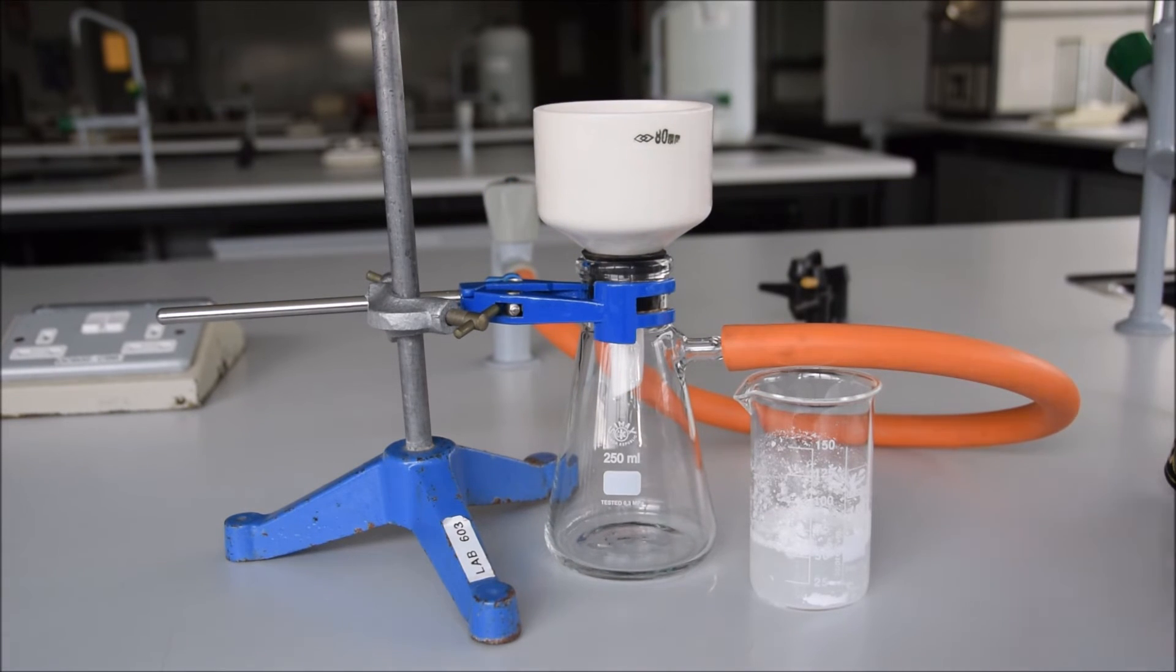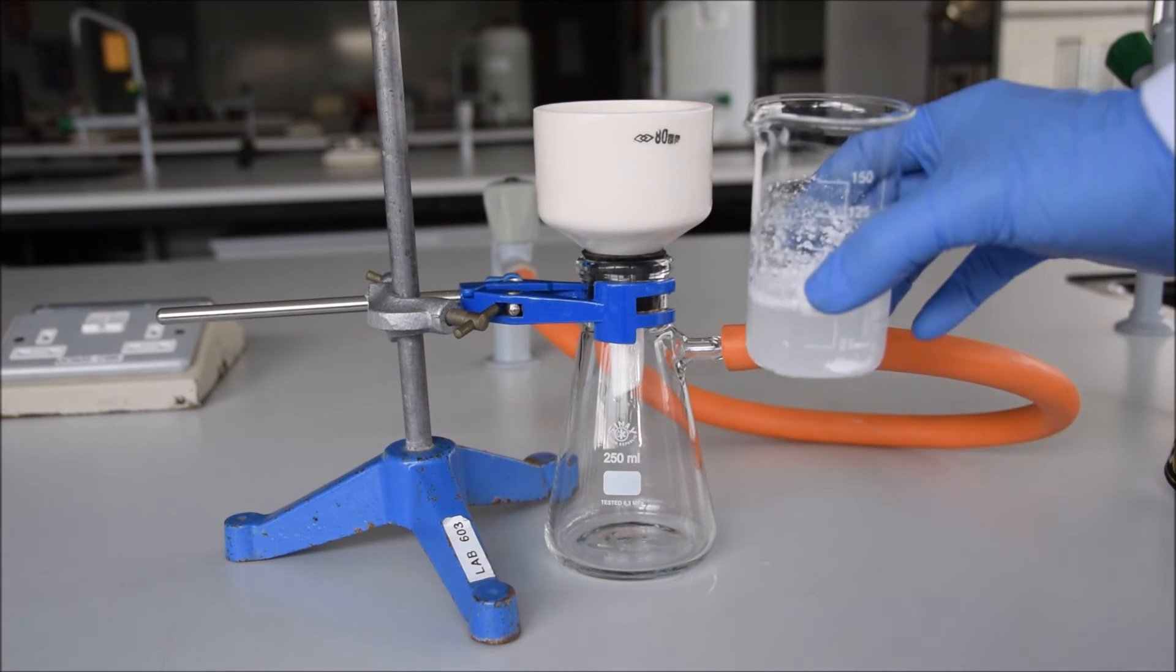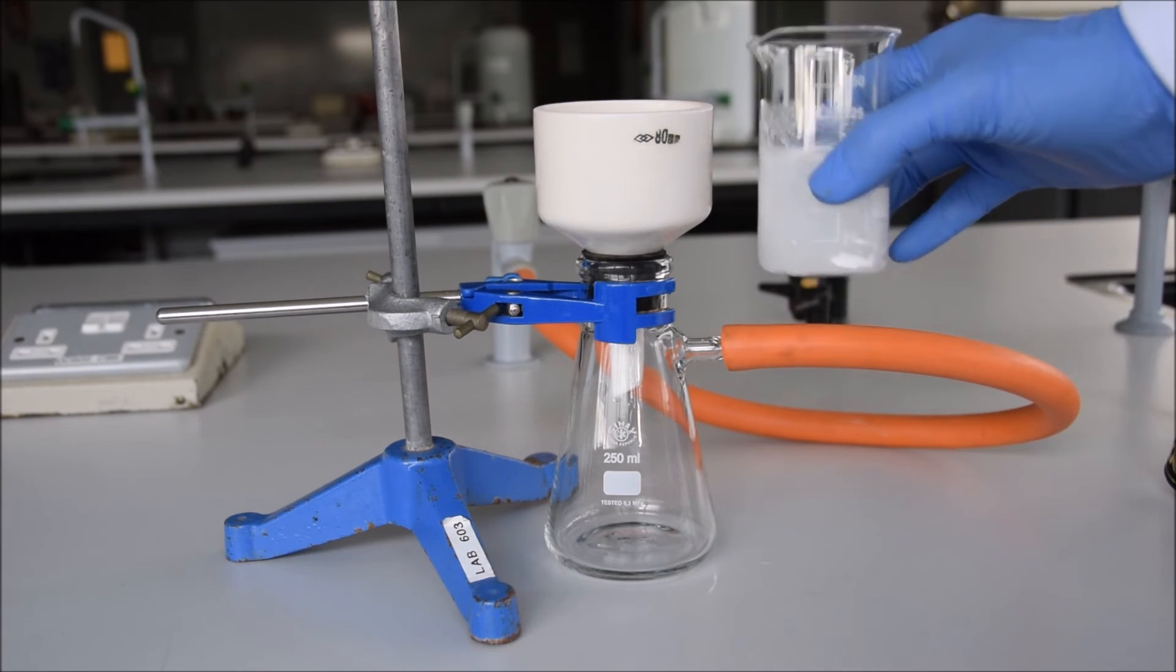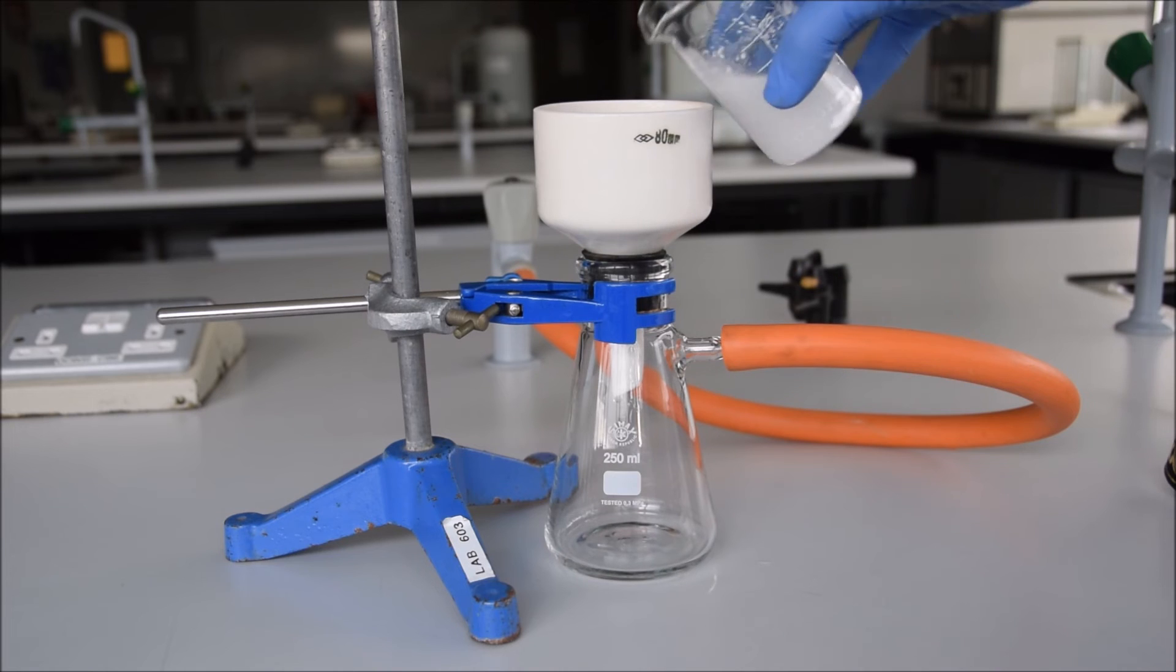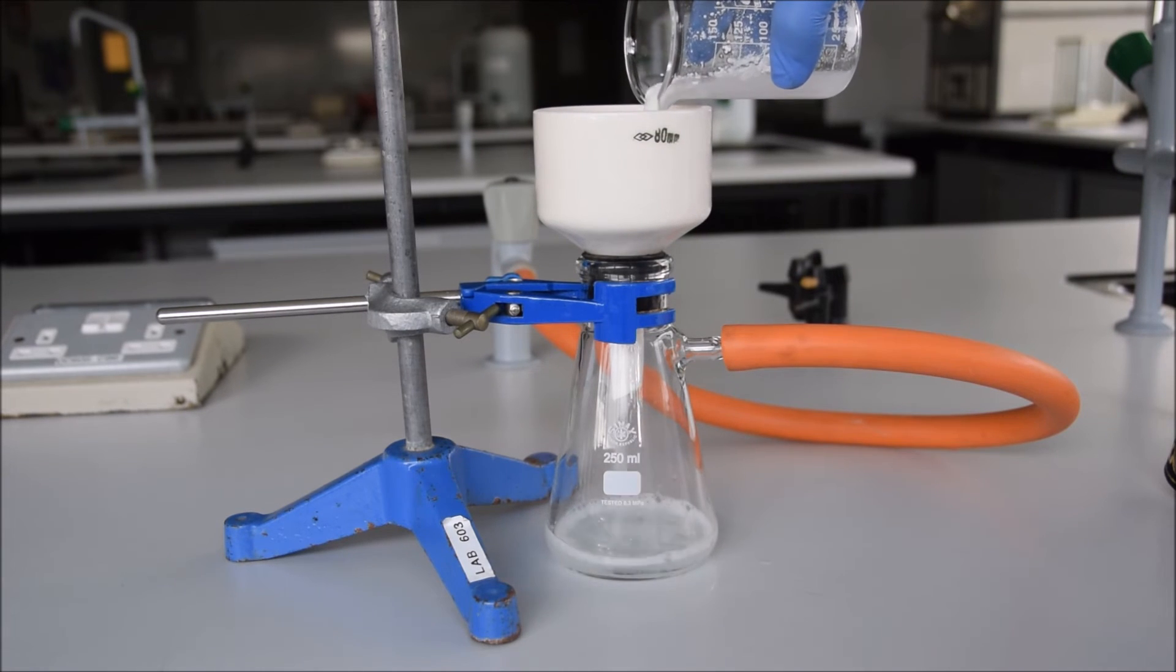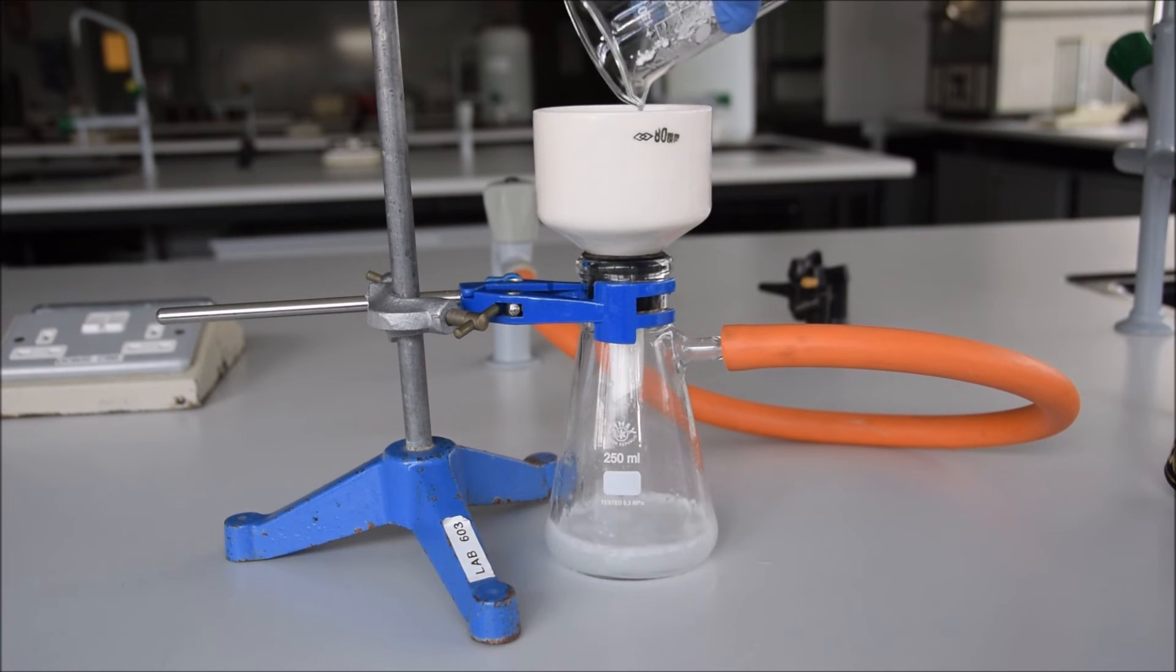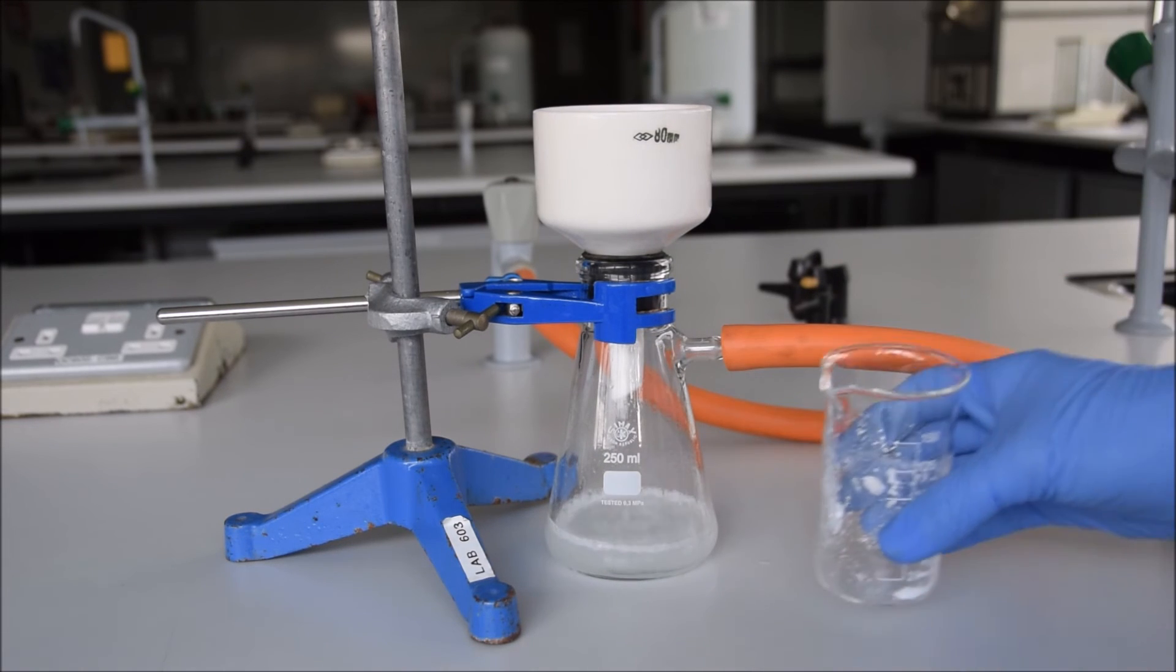The other thing that's important is to not turn the vacuum up too high. Start with that at quite a low setting. If you turn it up high you'll more than likely pull a hole through your filter paper, and when that happens your solid will end up in your flask and you'll have to start again, and it's a bit of a messy cleanup too. So try and avoid that.